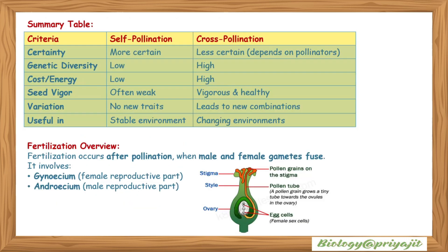We have discussed the summary table comparing self-pollination and cross-pollination. Now, fertilization overview: fertilization occurs after pollination where male and female gametes fuse. It involves the gynoecium — the female reproductive part — and the androecium — the male reproductive part.